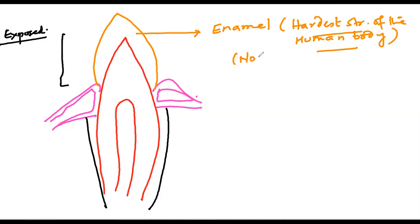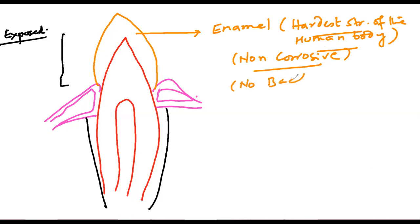Enamel is the hardest structure of the human body — much stronger than bone. It is non-corrosive. No bacteria can break it.